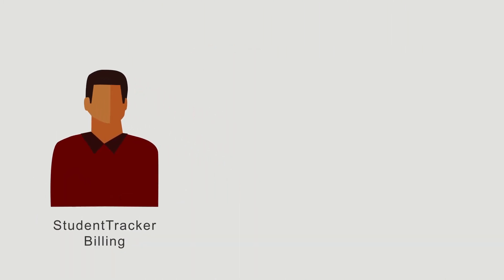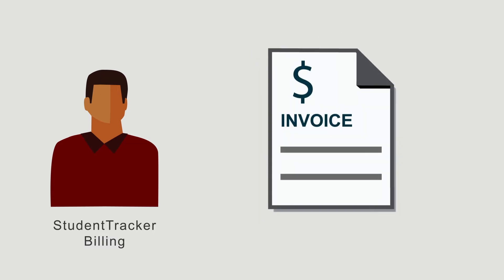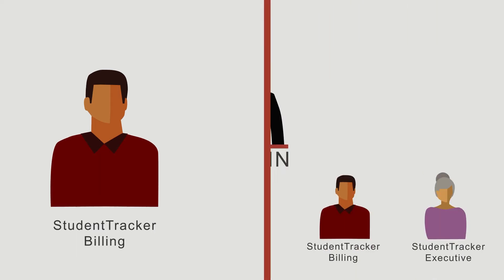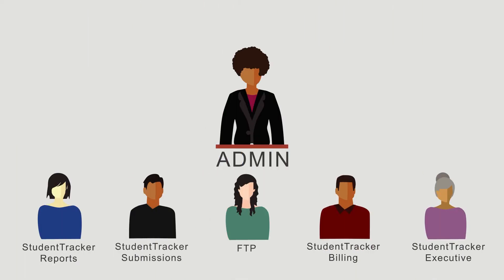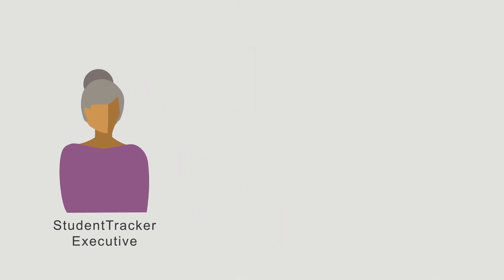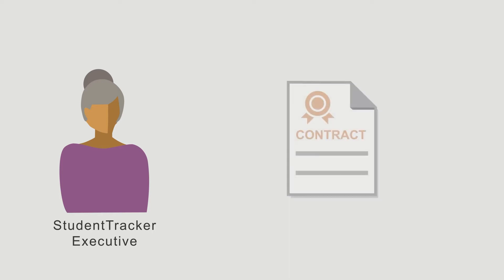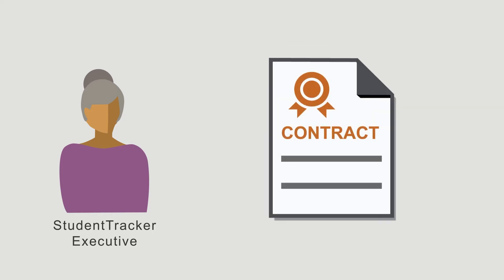Student Tracker Billing is related to the receipt of service invoices and can only be assigned to one user, while Student Tracker Executive is responsible for the institution's Student Tracker or contractual relationship with the Clearinghouse.